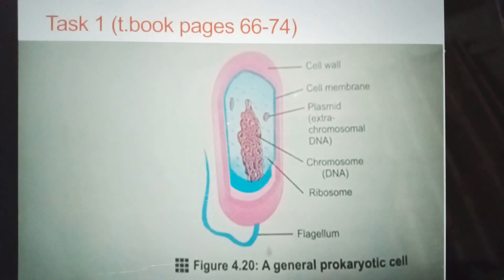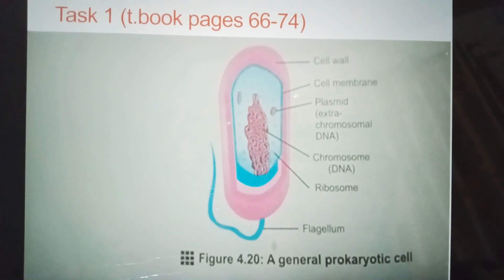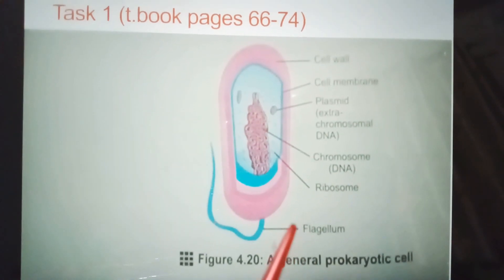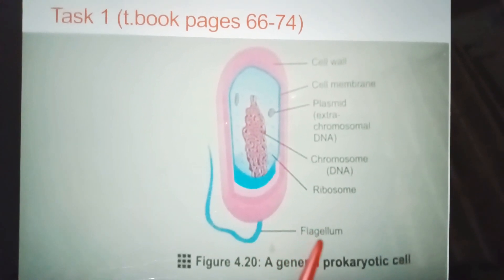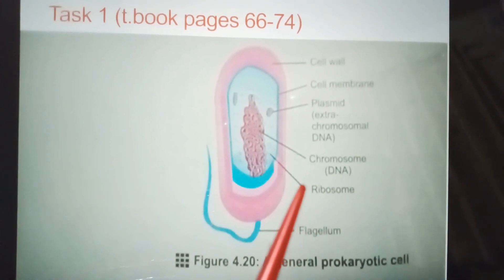Now it's time to discuss task 1. I will describe a general prokaryotic cell consists of flagellum, ribosome, chromosome that consists of DNA, chromosomal DNA, plasmid, cell membrane, and cell wall.